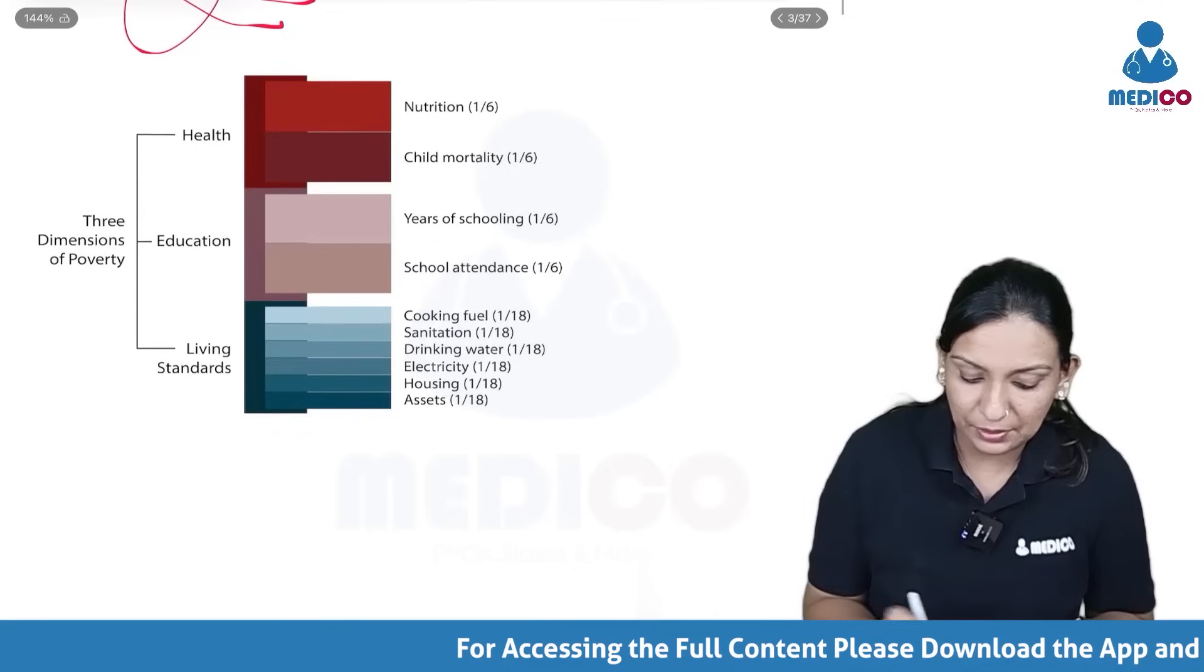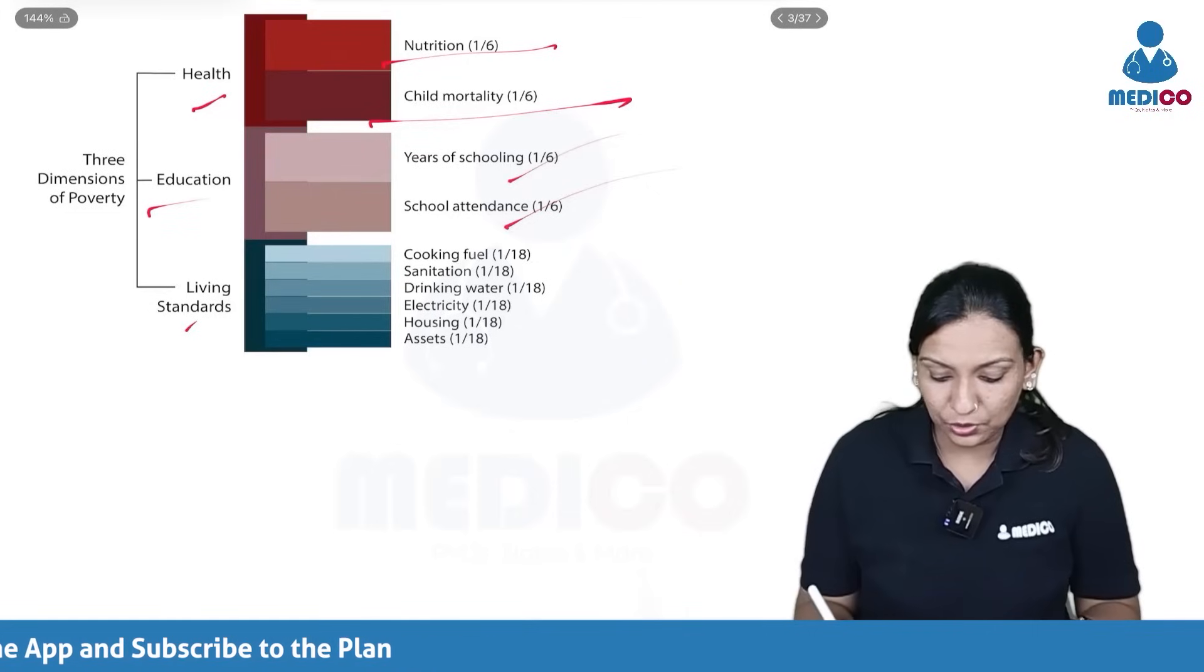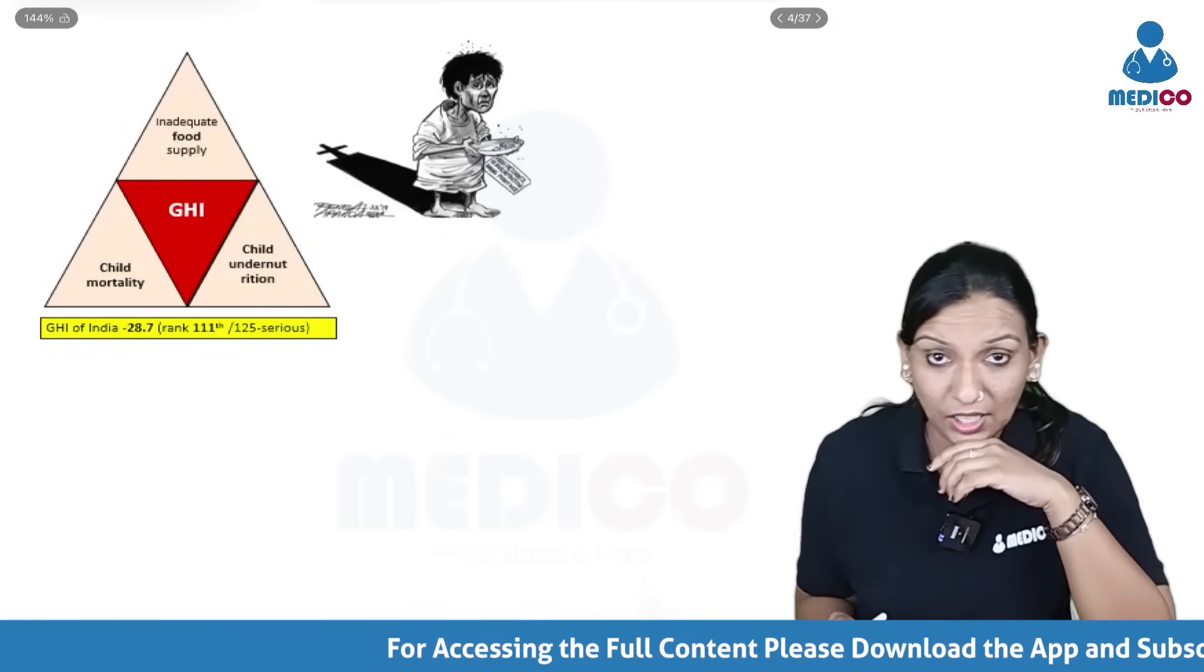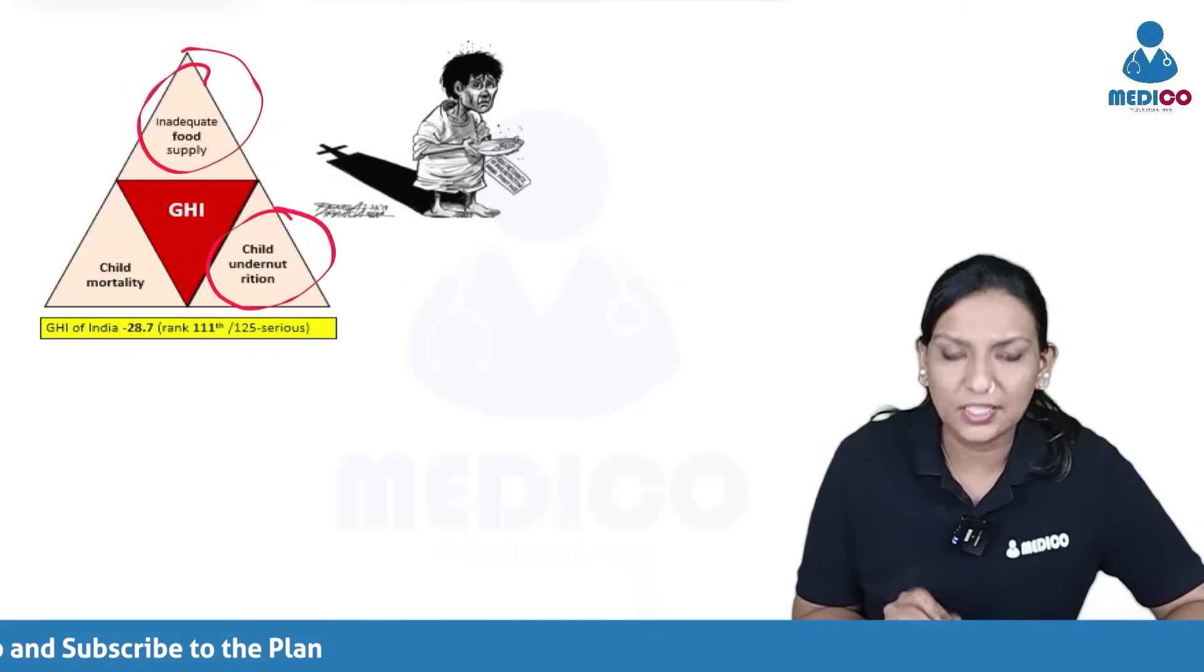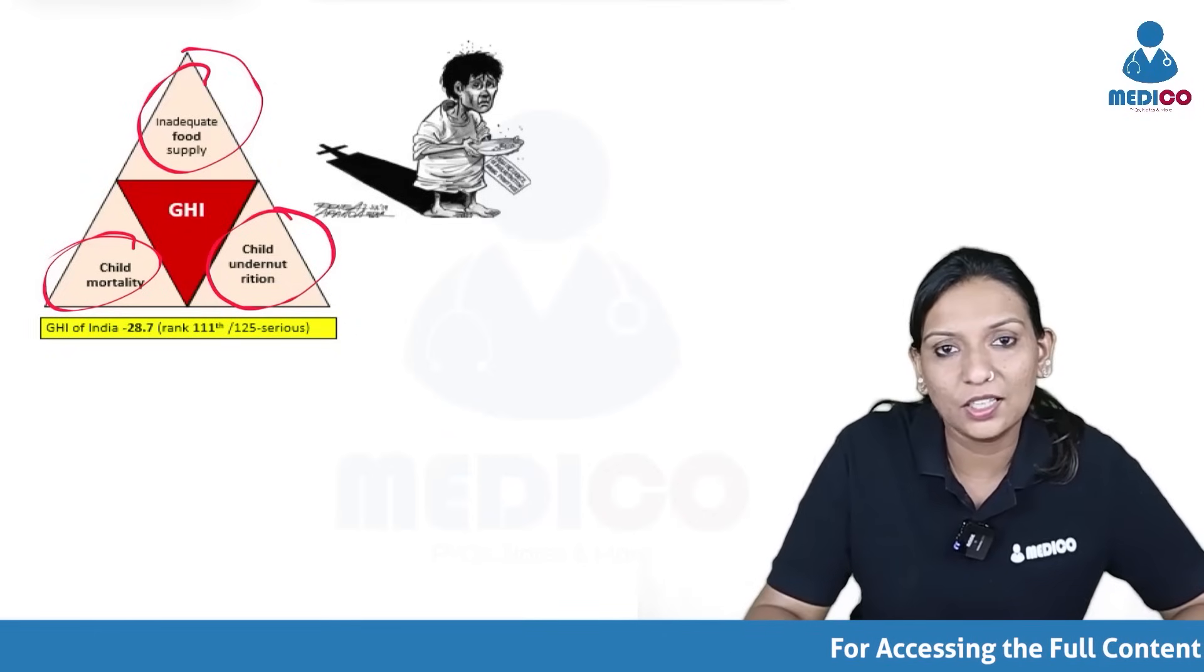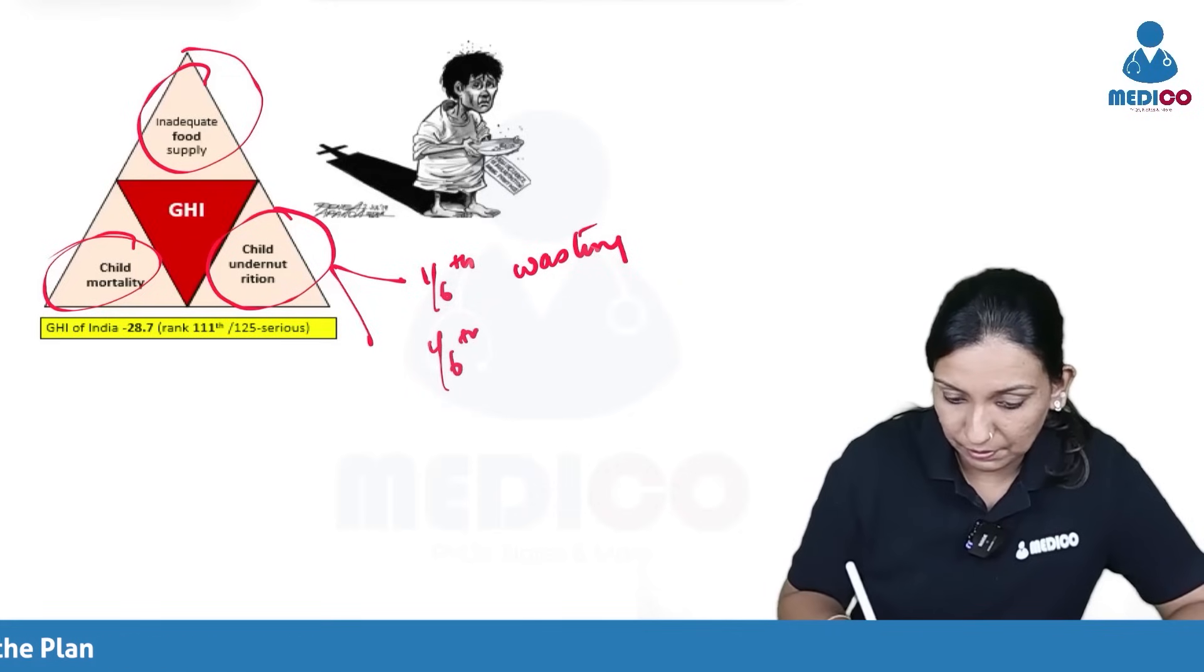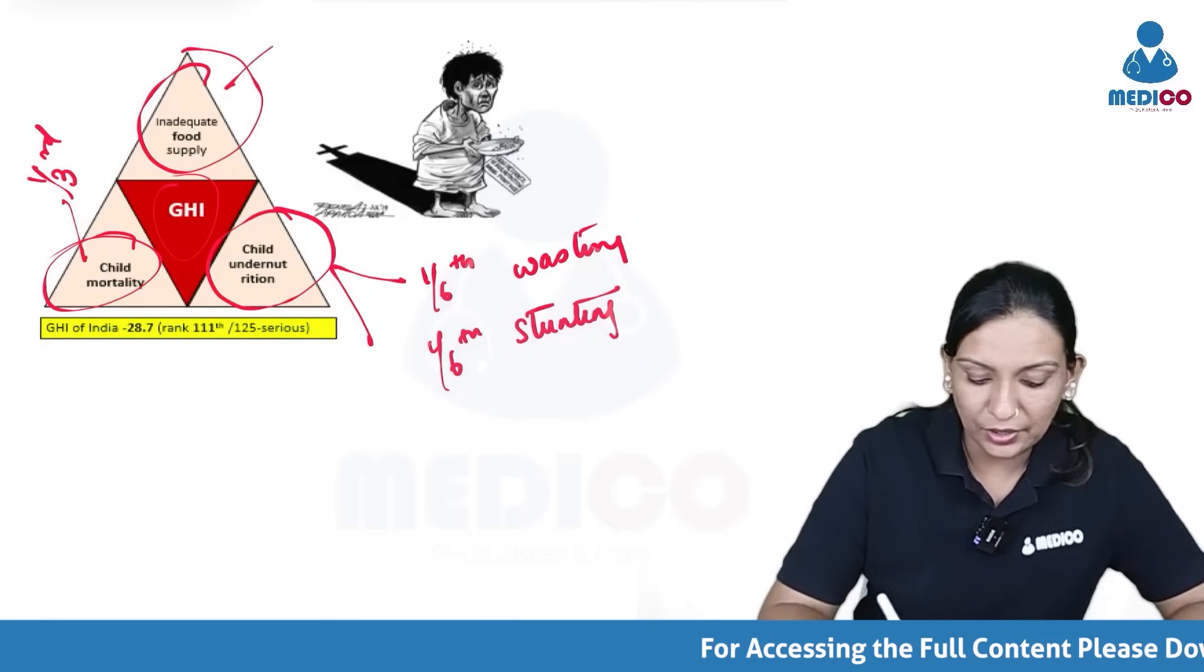Then this is your GHI or the global hunger index. What are the components of the global hunger index? Mainly we have three things. One is inadequate food supply. Second is child undernutrition or child malnutrition. Then you have child mortality. When I say child undernutrition, it again has two components. One-sixth is composed by wasting and one-sixth by stunting. Child mortality contributes one-third of the GHI. Inadequate food supply also one-third.